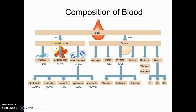The formed elements of blood are RBC, WBC, and platelets. In decreasing order of count: RBC is highest, followed by platelets, then WBC — don't confuse this. In WBC, the highest content is neutrophils, followed by lymphocytes and monocytes.